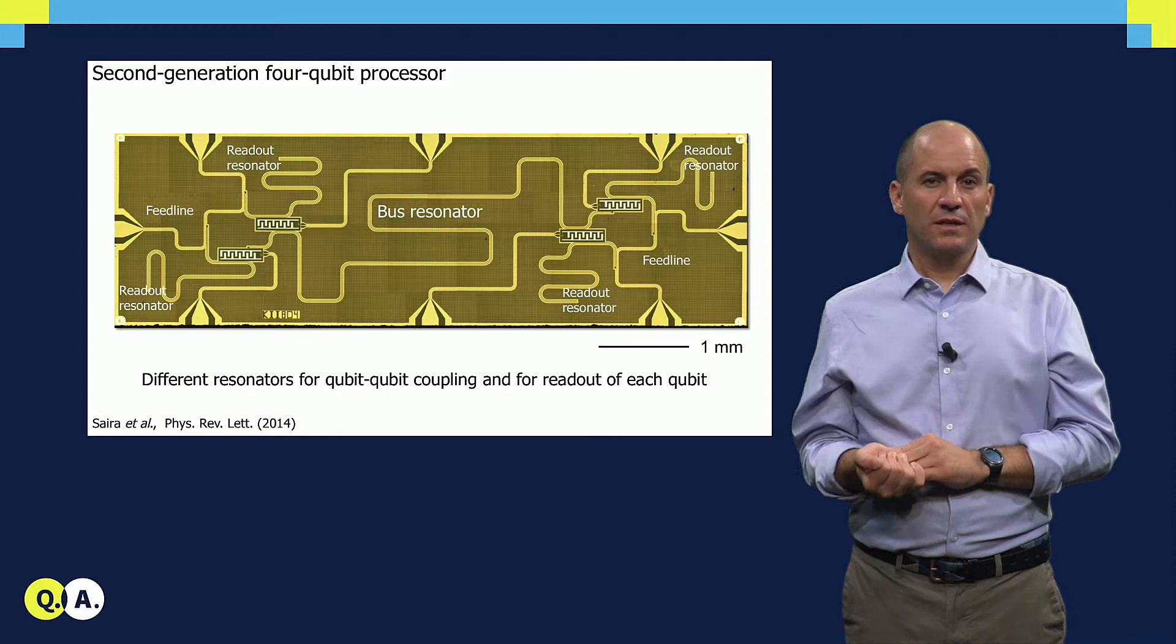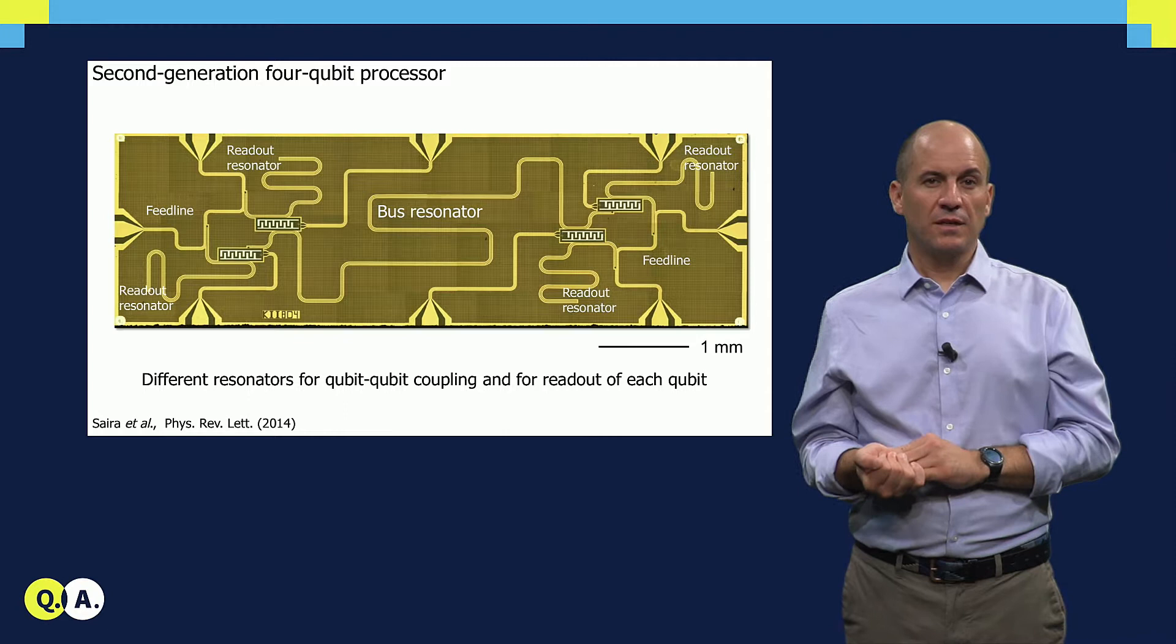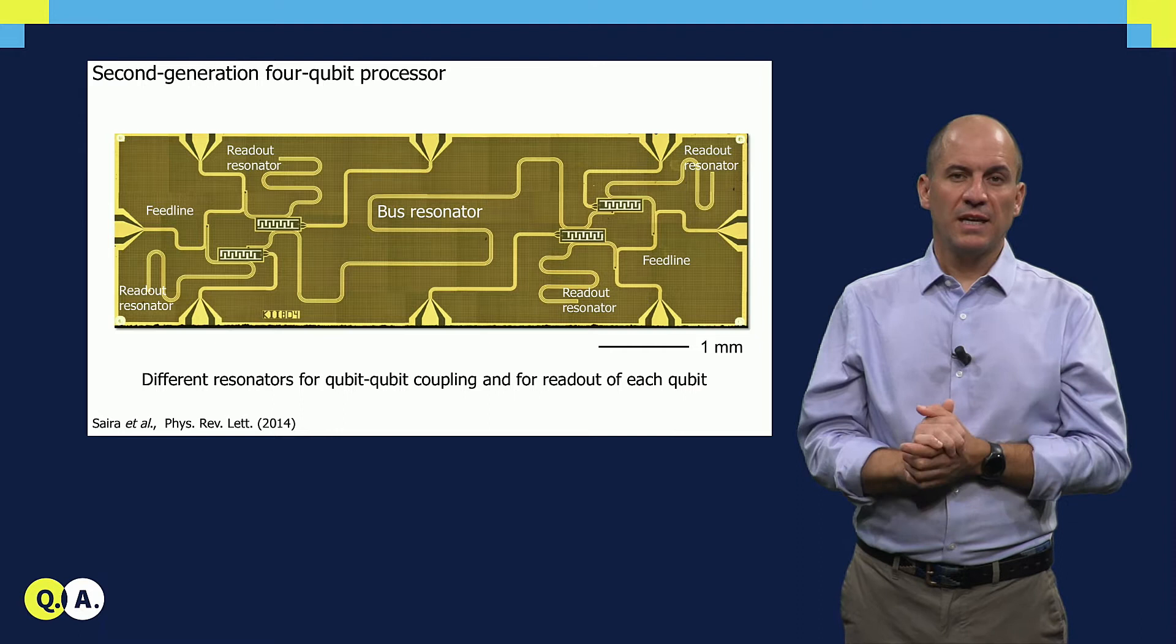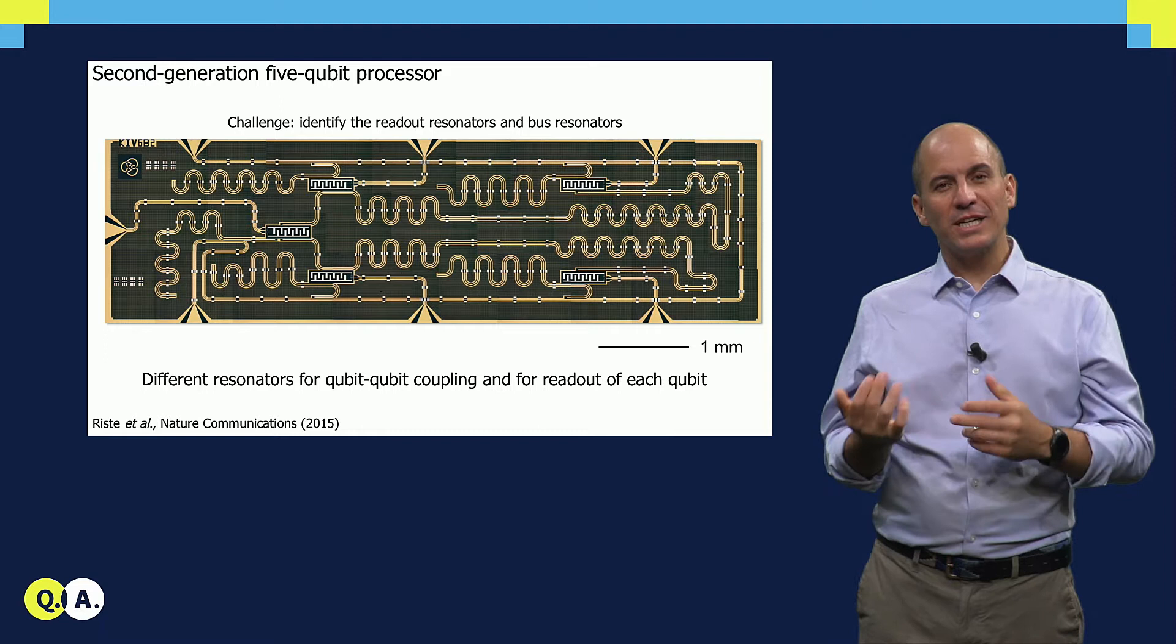Here, we see the same concept in a four-qubit version. The planar constraints required us to have two feed lines. Hopefully, you can easily recognize the bus resonator, common to all four qubits, and the dedicated readout resonators, one for each qubit.